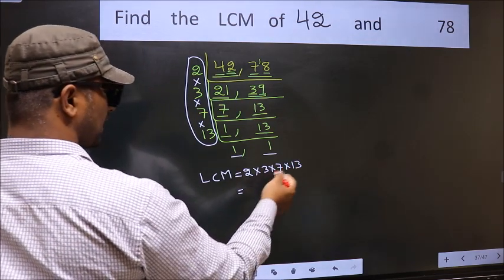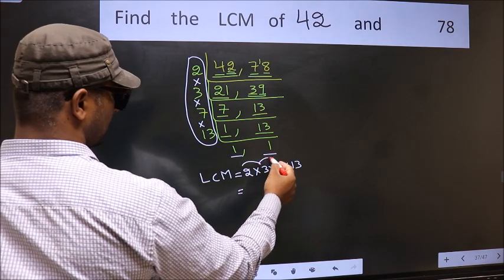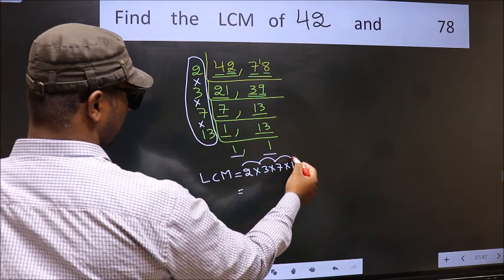Let us multiply these numbers. 2 into 3 is 6 into 7, 42 into 13.